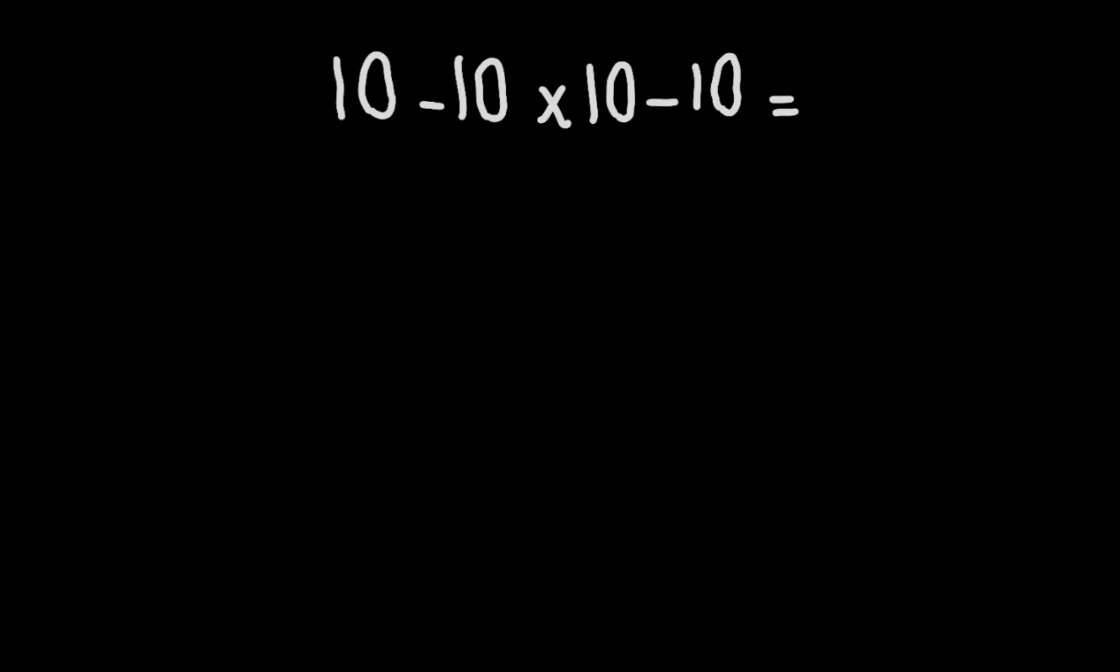Hey guys and welcome to this video. Today I want to find the value of this expression. Please subscribe if you like this video. 10 minus 10 times 10 minus 10. So 10 minus 10 gives us 0, 10 minus 10 gives us 0, and 0 times 0 gives us 0.